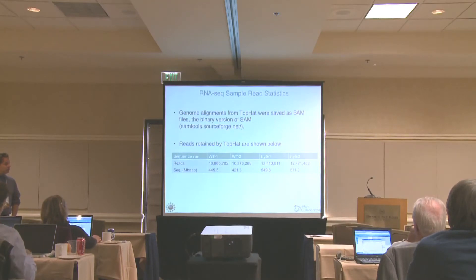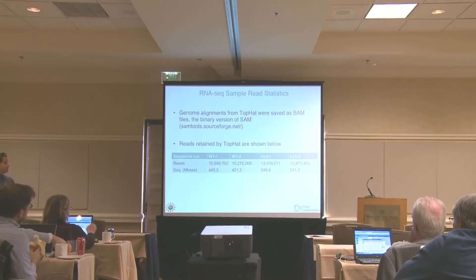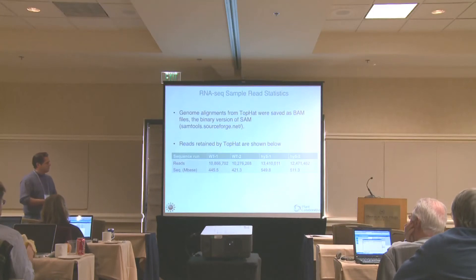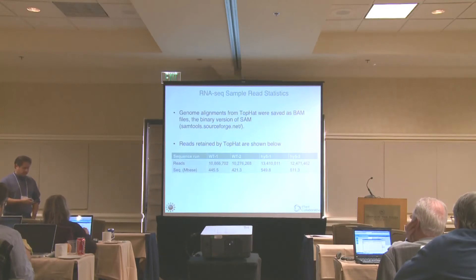There's about half a megabase of aligned sequence for each of these individual replicate analyses. For the purposes of this exercise, I randomly subsampled about one-eighth of each of these libraries for the FASTQ files that we're actually working with, just so that we can run it in a reasonable amount of time.